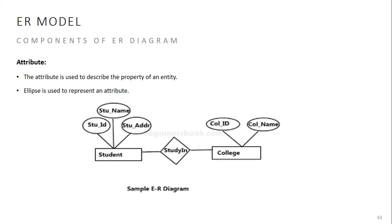Attribute — an attribute is the same as a property. An entity has properties. For example, we represent attributes using an ellipse shape in the ER diagram.